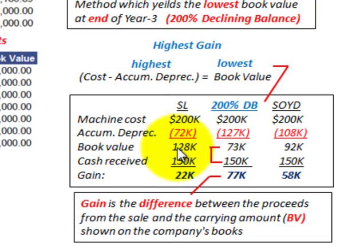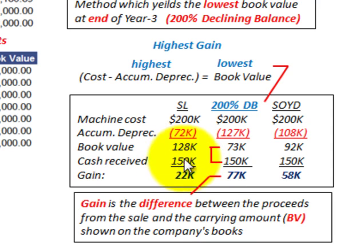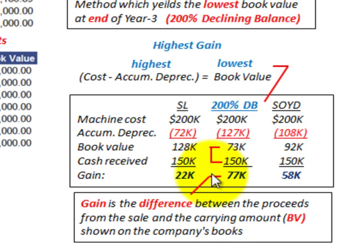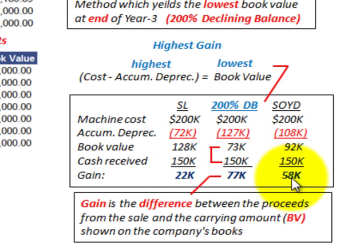The book values at end of year three are: straight line $128,000, declining balance $73,000, and sum of years digits $92,000. If the asset is sold for $150,000 cash, the gain is the proceeds minus the book value. Straight line gain: $22,000. Sum of years digits gain: $58,000. Declining balance gain: $77,000. So the 200% declining balance produces the largest gain at $77,000 because it has the lowest book value.